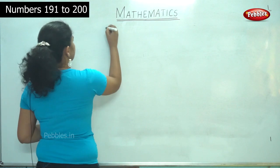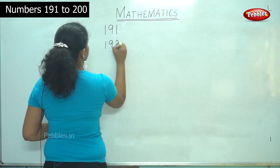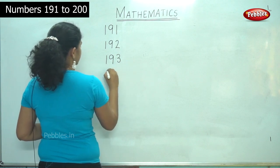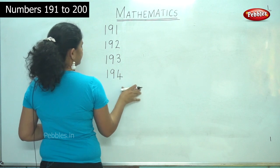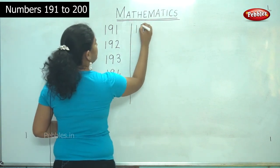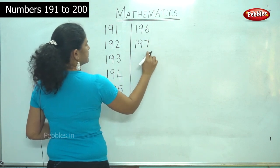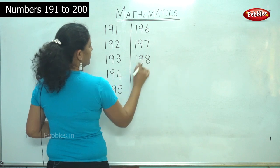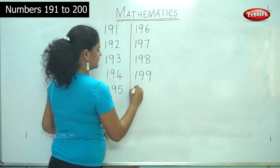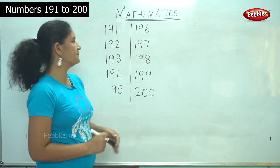So the first number: 191, 191, 192, 192, 193, 193, 194, 195, 196, 196, 197, 197, 198, 198, 199, 199, and finally 200, 200. So shall we repeat the numbers once more?